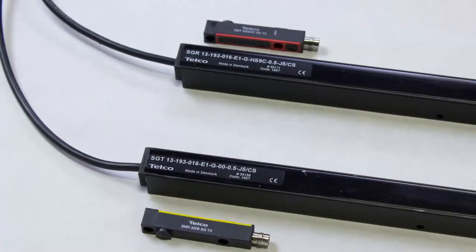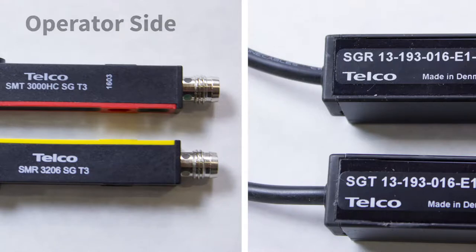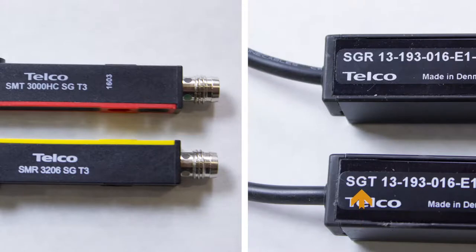You can also tell what side to put the photo eye and light curtain on by the letters stamped on each. The photo eye stamped SMT and the light curtain stamped SGR will be on the operator side of the door. The photo eye stamped SMR and the light curtain stamped SGT will be on the non-operator side of the door.